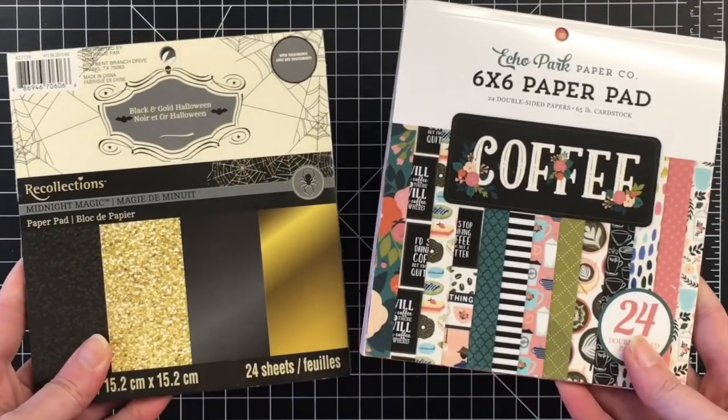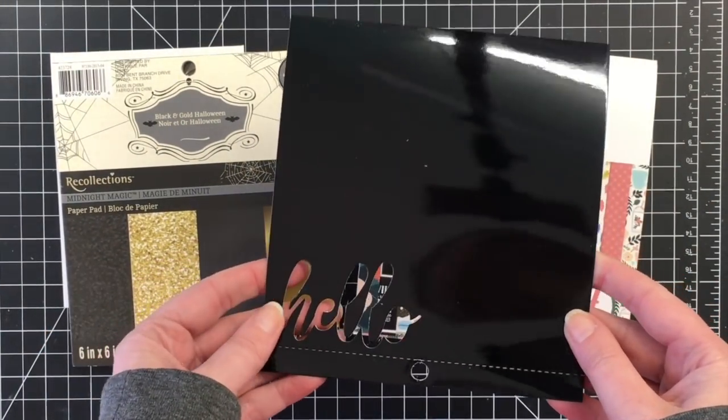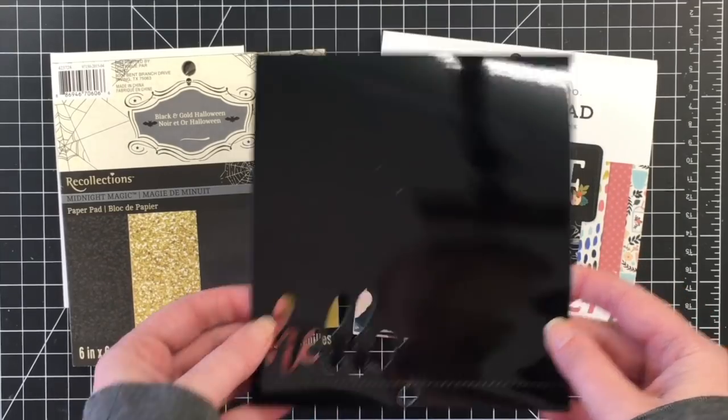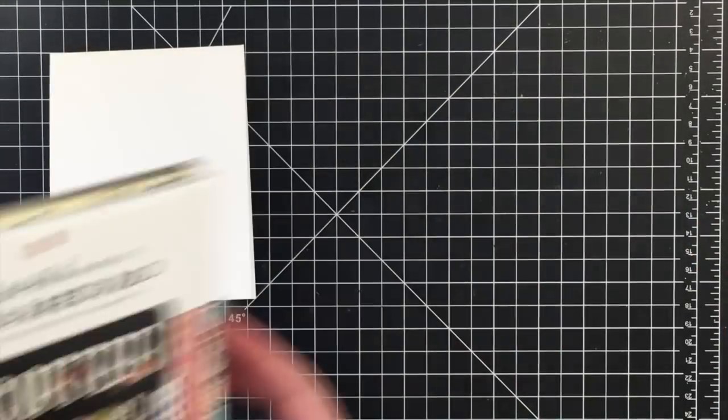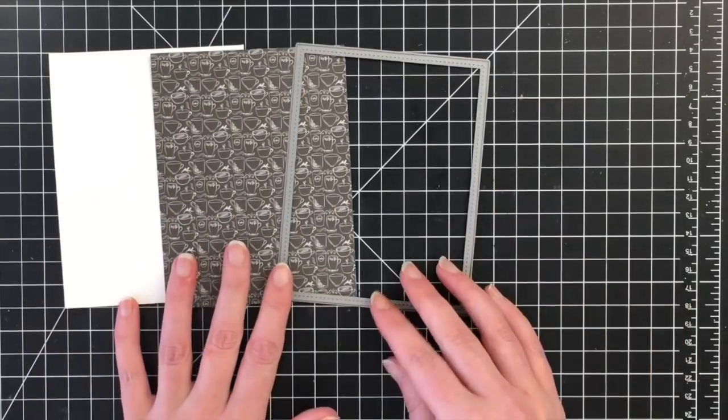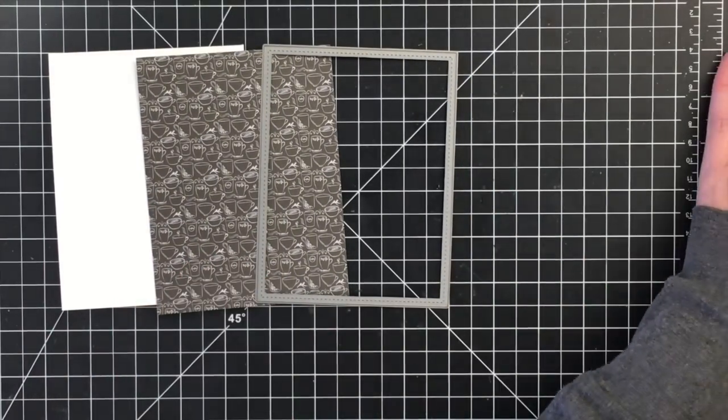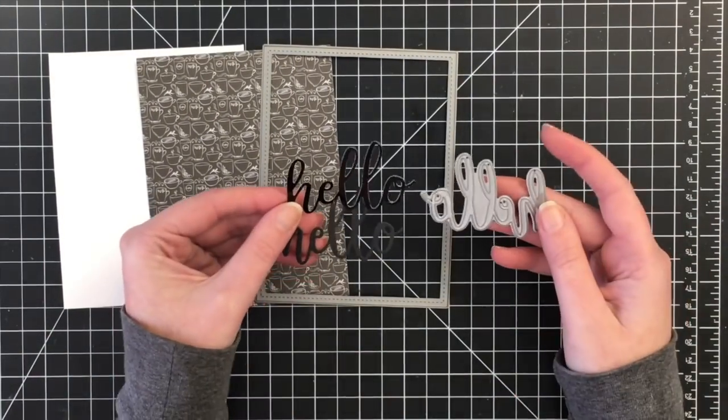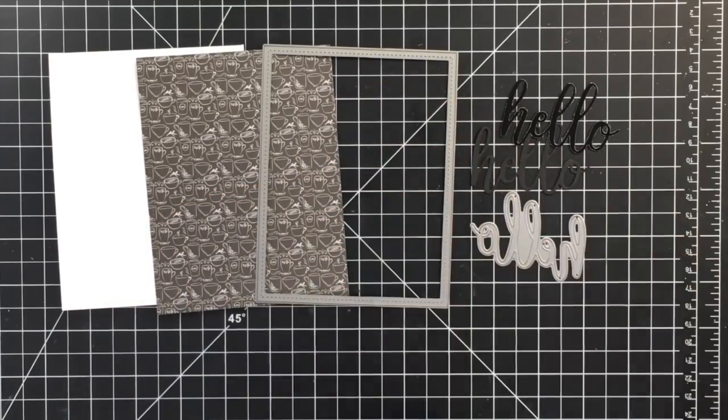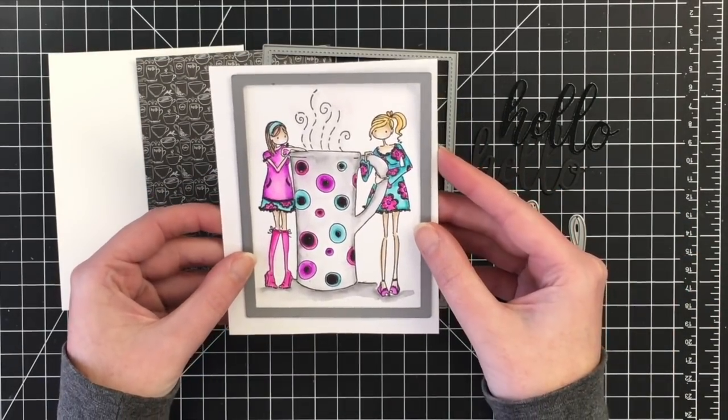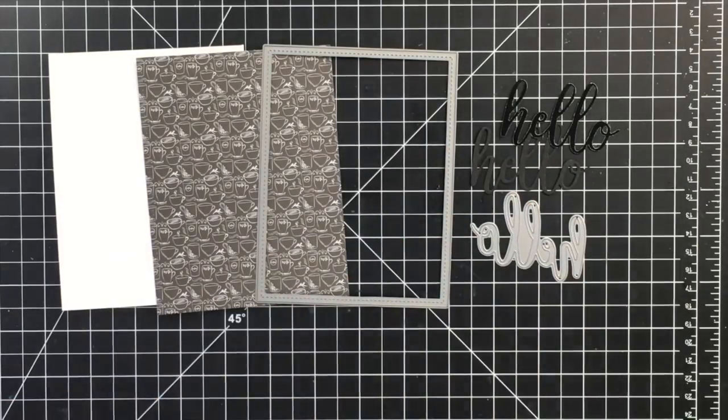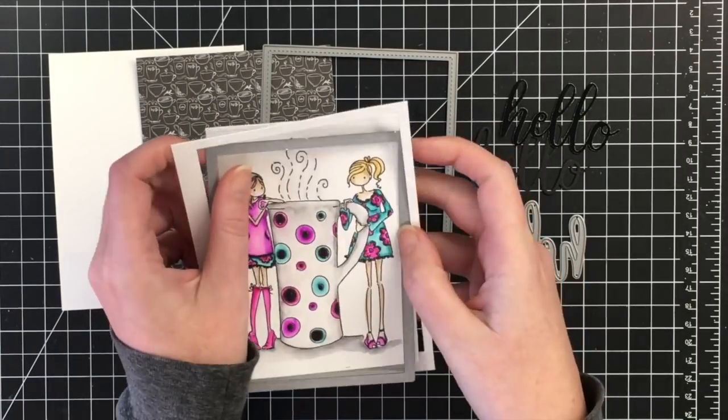I'm going to use this rubbery fun paper. This is from recollections and it was one of their Halloween paper pads a while ago. It's called Midnight Magic Gold Halloween. And then I'm using the Echo Park coffee paper, which is a newer release. I'm using the black paper there.